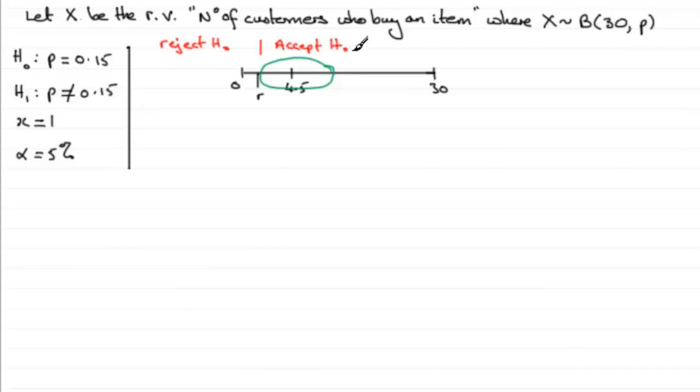Now we've got one, which is less than 4.5, so it's in the rejection region. We have to do a two-tailed test - we're going to be splitting this in half at two-and-a-half percent. So what happens is that we're going to reject H₀.